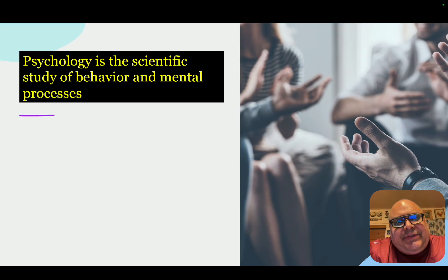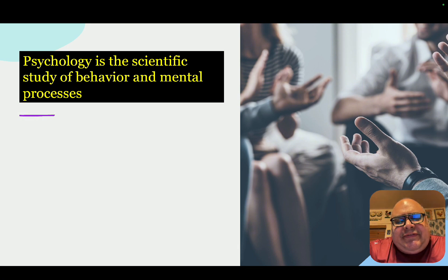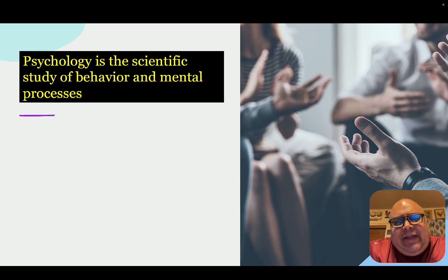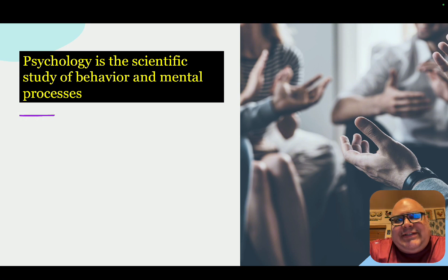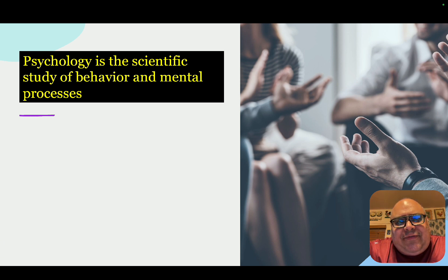Feldman begins by providing us with a simple, straightforward definition of psychology. We can think of psychology as the scientific study of behavior and mental processes. For our course and most psychology courses, these behaviors and mental processes will focus on humans, but it is also possible for some psychologists to look at non-human or animal behaviors and processes as well.